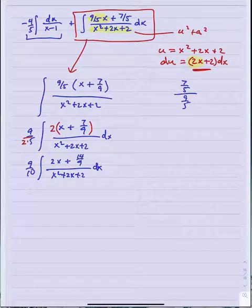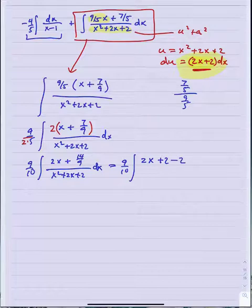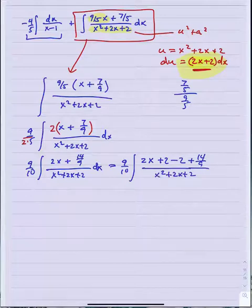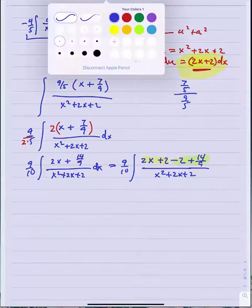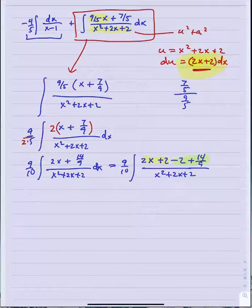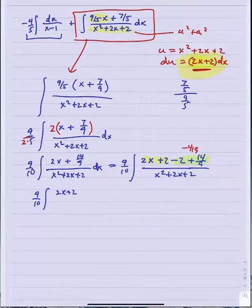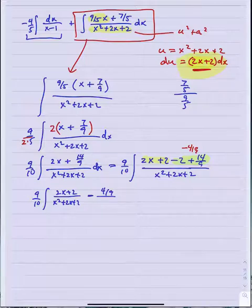Using the add-and-subtract trick: write 2x plus 14 ninths as 2x plus 2 minus 2 plus 14 ninths. Combining: negative 2 plus 14 ninths is negative 18 ninths plus 14 ninths, which is negative 4 ninths. So we've got 9 tenths times the integral of 2x plus 2 over x squared plus 2x plus 2, minus 4 ninths over x squared plus 2x plus 2.